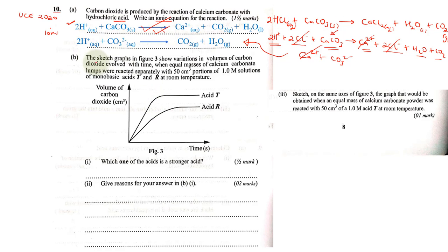Part B: The sketch graphs in Figure 3 show variations in volumes of carbon dioxide evolved with time when equal masses of calcium carbonate lumps were reacted separately with equal volume portions of 1.0 molar solutions of monobasic acids T and R at room temperature. So both acids are monobasic, meaning that the mole ratio of our acid to the base in this case is 1 to 1.